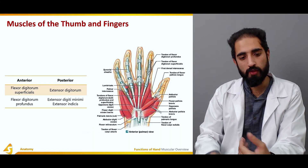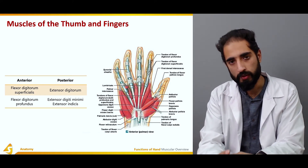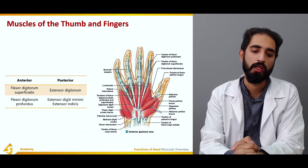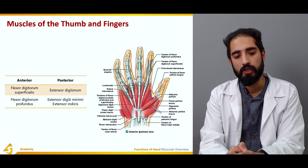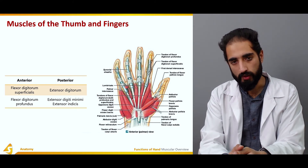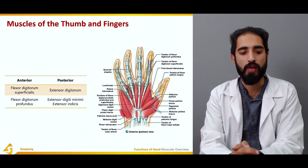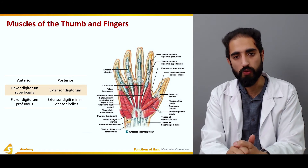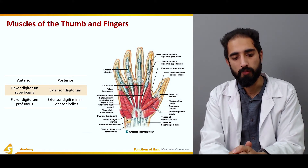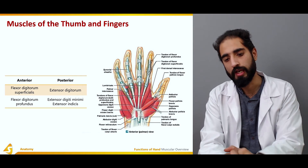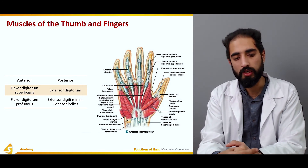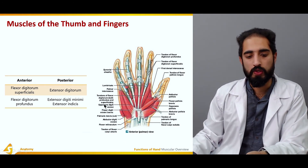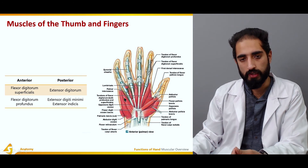Regarding the intrinsic muscles, there are two major muscles on the proximal aspect and two on the distal aspect. On the anterior or ventral aspect we have the flexor digitorum superficialis and flexor digitorum profundus, which are involved in flexion of the digits. On the posterior aspect we have the extensor digitorum, involved in extension of the digits, and extensor digiti minimi, involved in extension of the fifth digit.